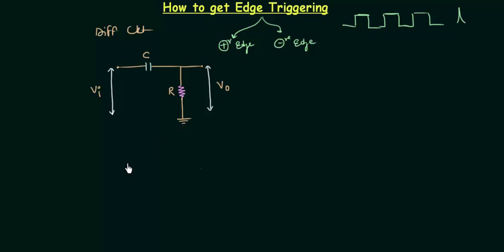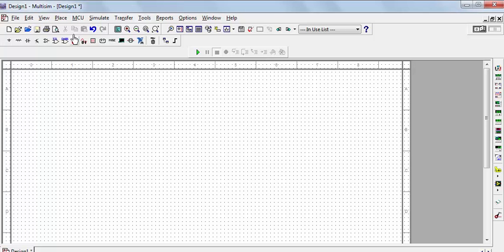We use the differentiator circuit to get edge triggering. It consists of one capacitor and one resistor, with both values being very small. The input voltage is VI and the output voltage is VO. Our first aim is to find the value of the output voltage, and then we will simulate it using Multisim, where we will observe the output waveforms using the oscilloscope.